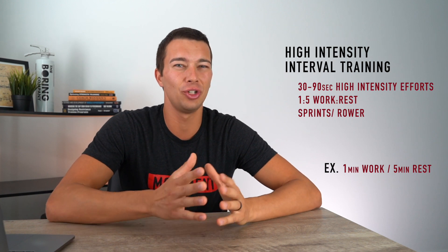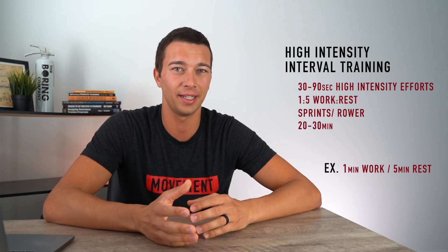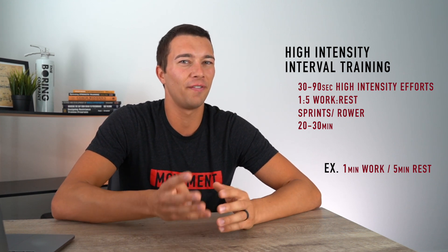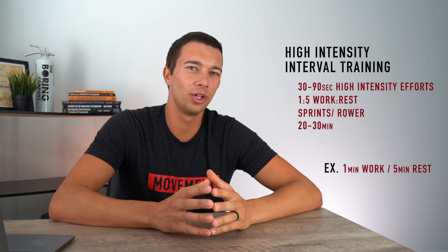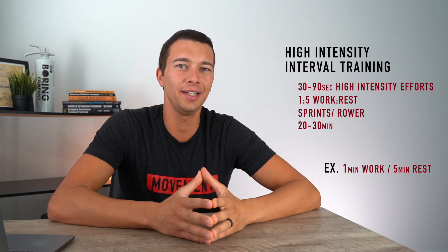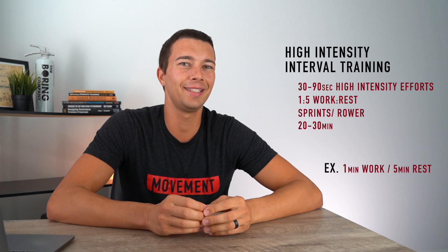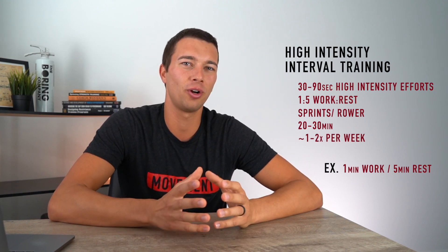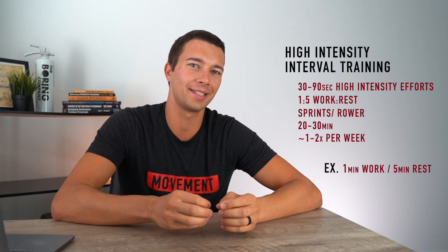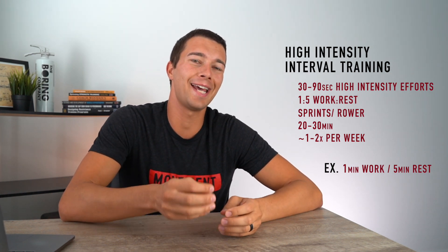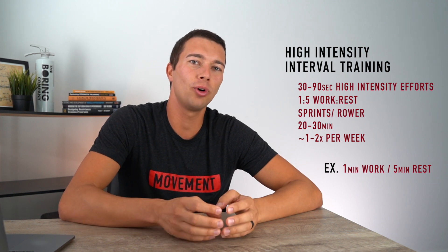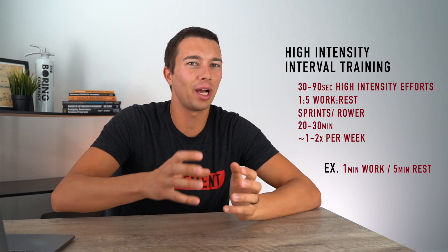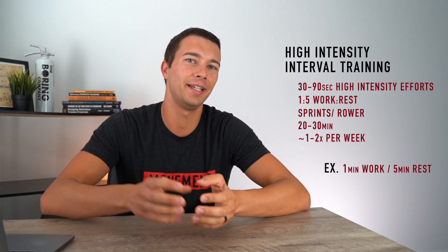HIIT workouts typically last no longer than 20 to 30 minutes — for example, one minute on, five minutes rest, done four or five times. Frequency is low: typically once a week for aerobic athletes and maybe twice a week for field sport athletes using it for conditioning. Overall, HIIT is the most taxing and intense form of aerobic training — though in reality it primarily trains the anaerobic systems.